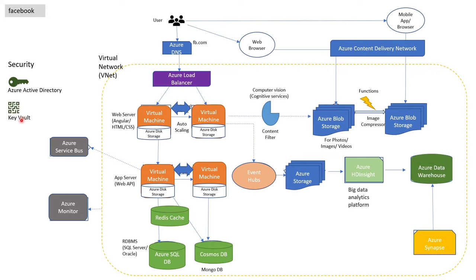To manage all these resources — for example, to add a new load balancer — we can do it via Resource Manager. You might have heard of CI/CD, which is basically for deploying the application in one go without deploying each and every component separately. It can be done by Azure DevOps. If you want to learn it in detail, I will cover this in the next videos.